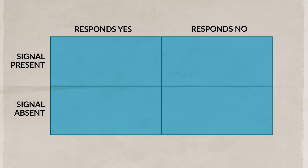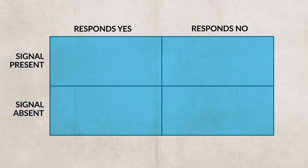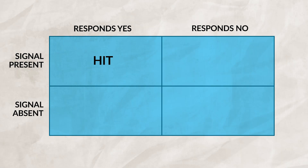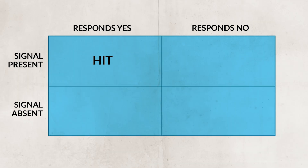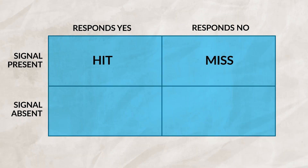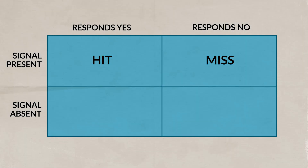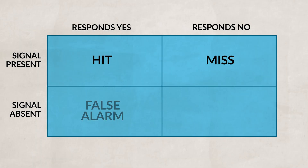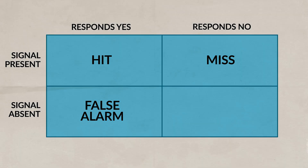Going back to the signal detection theory, we can break it down in a table. If you said yes, you noticed the subscribe text, then it was a hit — the signal was present and you were aware of it. If you were not aware of the subscribe text when it was shown, then it was a miss — the signal was present and you were not aware of it. If there was never any subscribe text but you said you saw it, that would be a false alarm. And if there was no subscribe text and you said you did not see any stimuli, then you would be correct rejection. Spoiler alert: there was never any subscribe text popping up throughout this video — or was there?